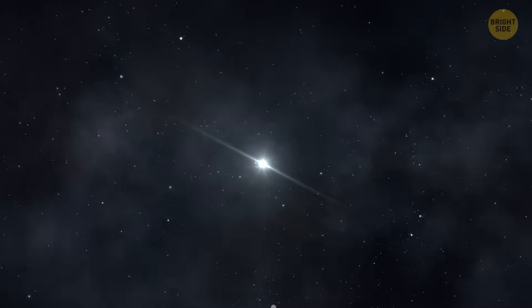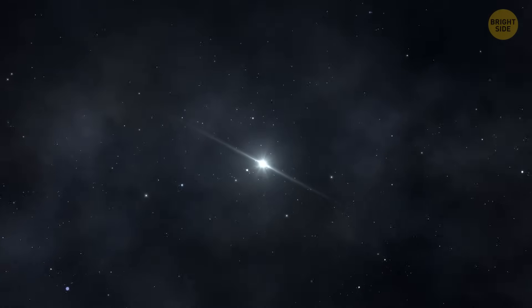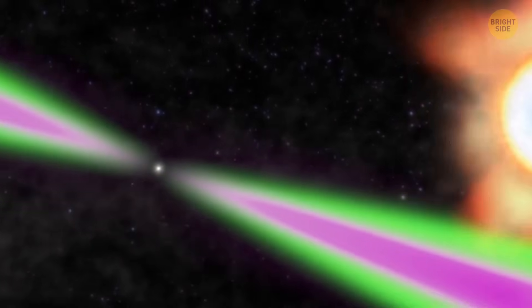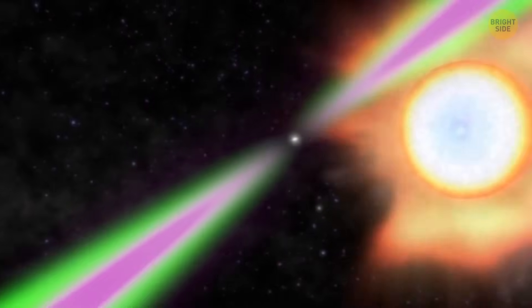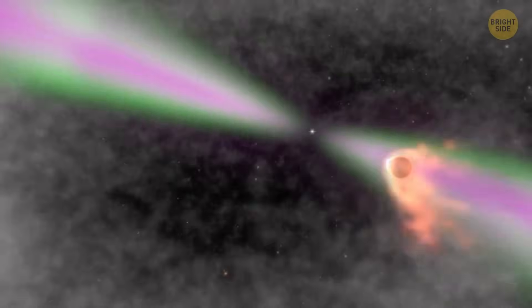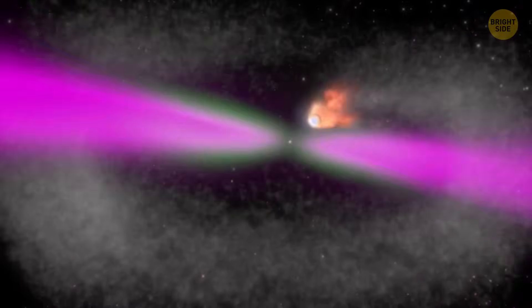The next stop on your space sightseeing tour is the Black Widow Pulsar. Just like its spider namesake, this rotating neutron star is munching on its partner, a lightweight brown dwarf star. The more material the Pulsar consumes, the more slowly it spins. The energy the neutron star is losing in the process causes the companion star to dwindle.